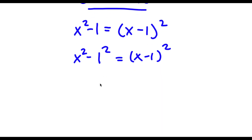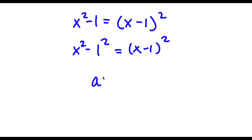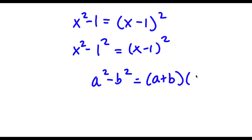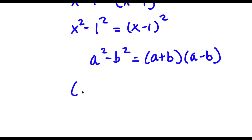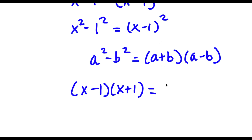Now, if I have something in the form a squared minus b squared, this is equal to a plus b times a minus b. So in this case, x squared minus 1 squared is going to equal x minus 1 times x plus 1, and this is equal to x minus 1 squared.